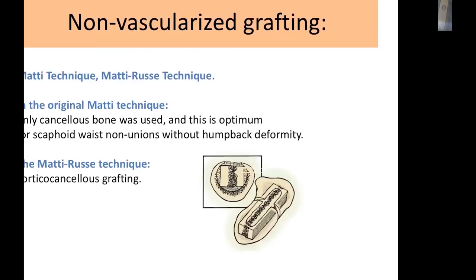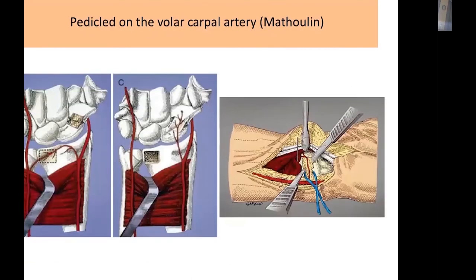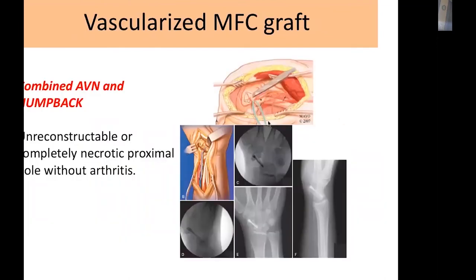Treatment of scaphoid non-union without arthritis: stable non-union requires fixation only; unstable non-union requires bone grafting — either non-vascularized (original Matti-Russe cancellous or corticocancellous) or vascularized graft based on MRI vascularity assessment — plus rigid fixation using headless screws. Vascularized graft options include the dorsal 1,2 intercompartmental supraretinacular artery (ICSRA) graft, the volar carpal artery graft popularized by Matola, or the free medial femoral condyle graft for combined AVN and humpback deformity.